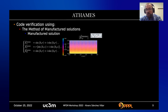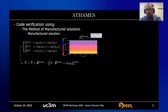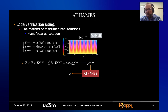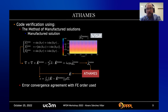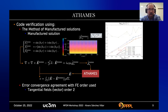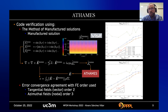We carried out verification of the code using the method of manufactured solutions. We generate an analytical solution and its corresponding forcing term, feed this forcing term to the numerical solver, and compare to obtain errors. We found that the error convergence follows the order of the chosen element. Here you can see the tangential field and the azimuthal field, and for order-two elements we have order-two convergence, and order-three for the out-of-plane component.